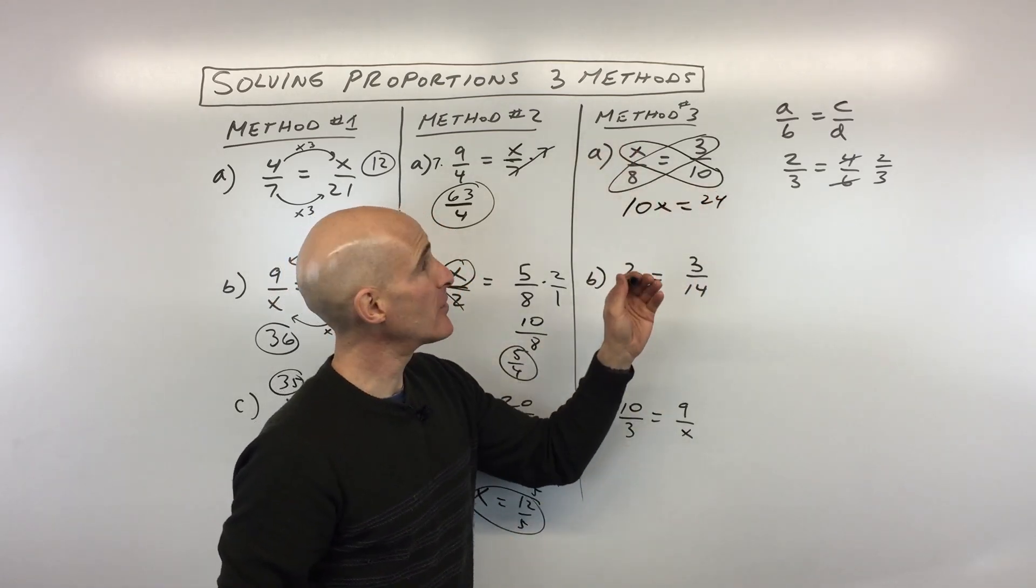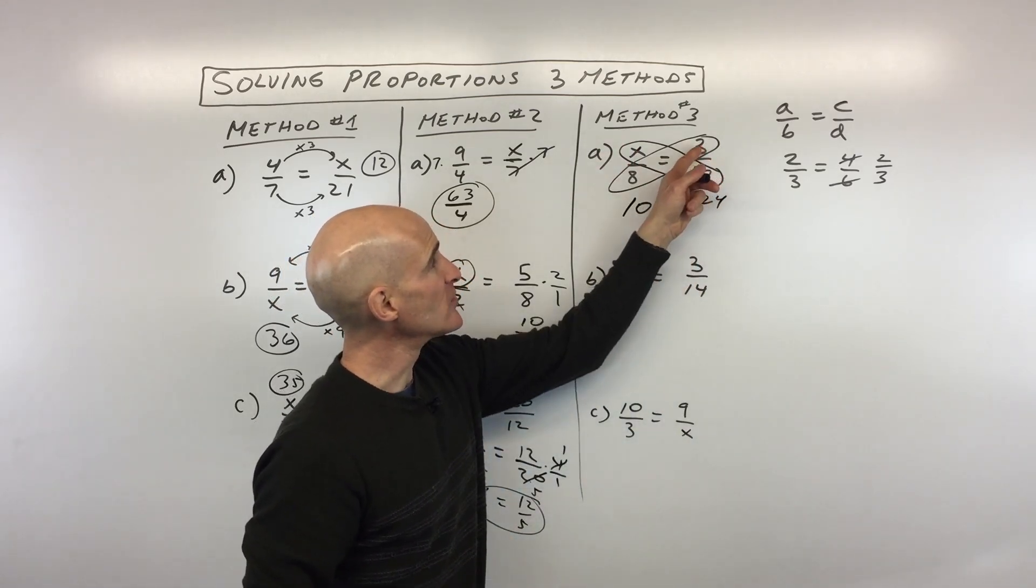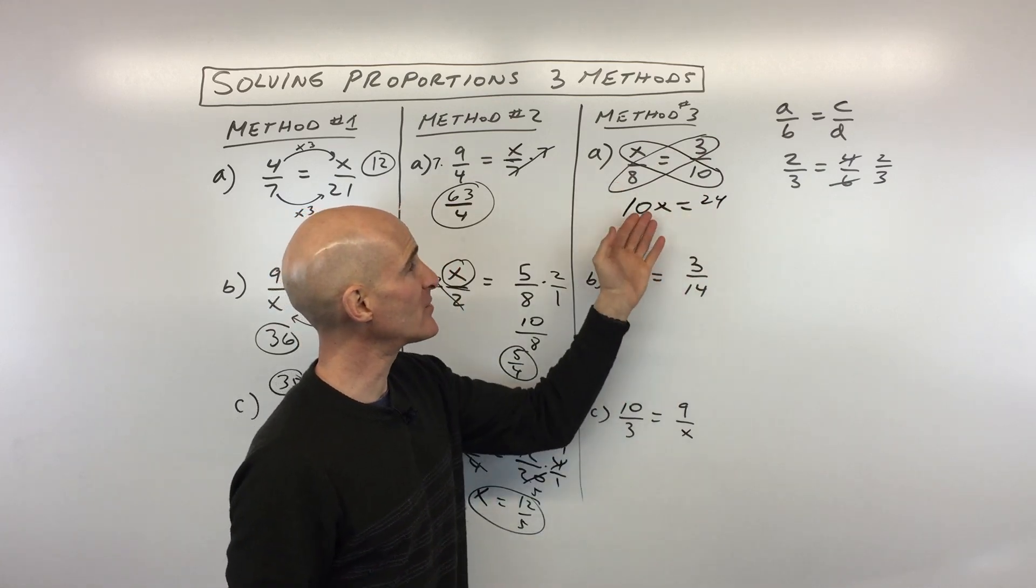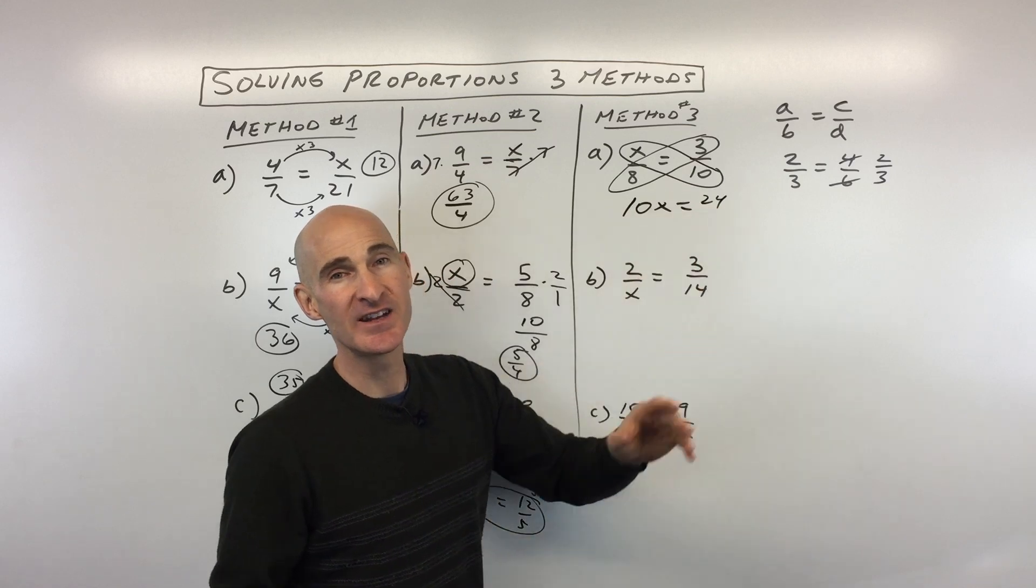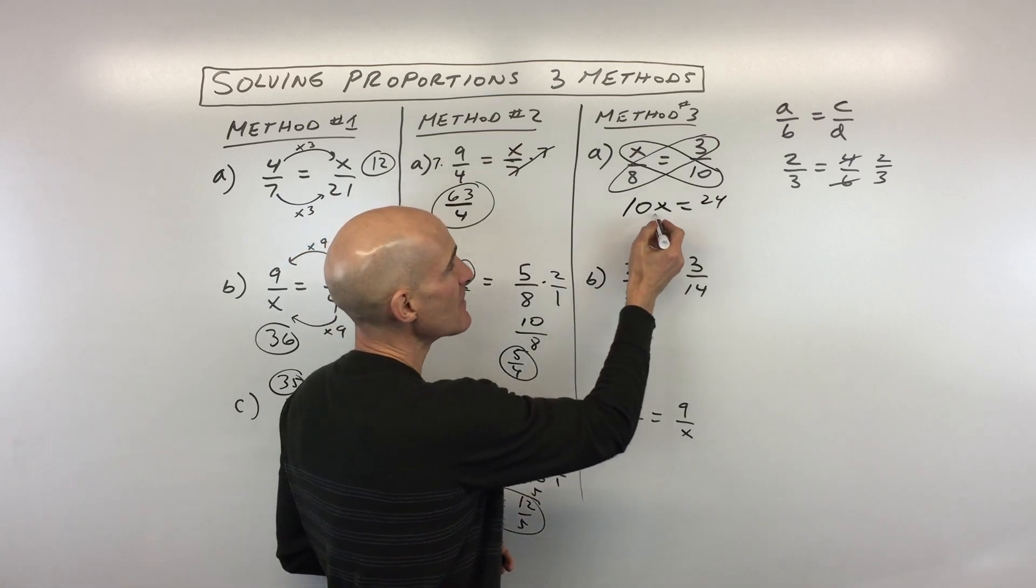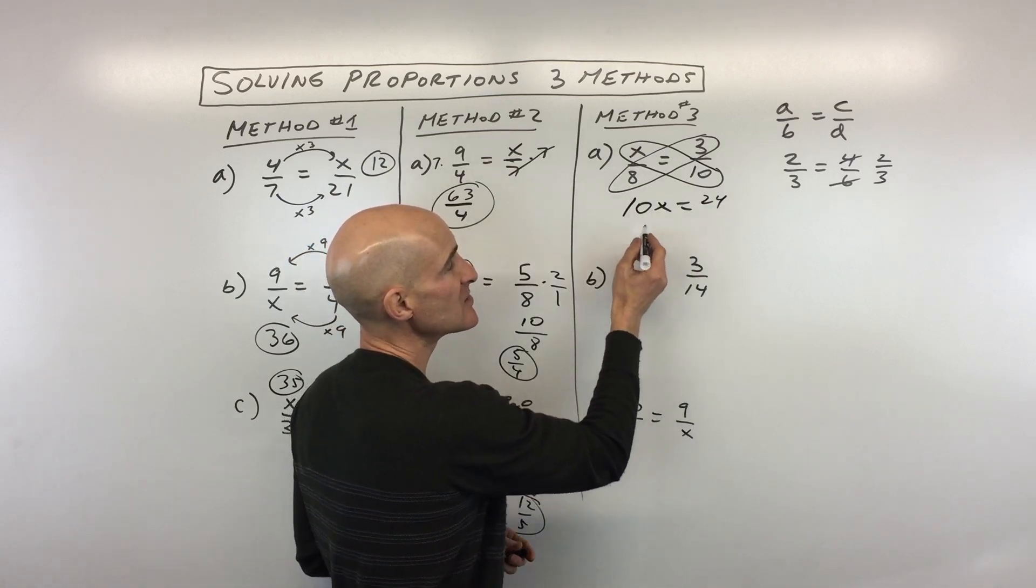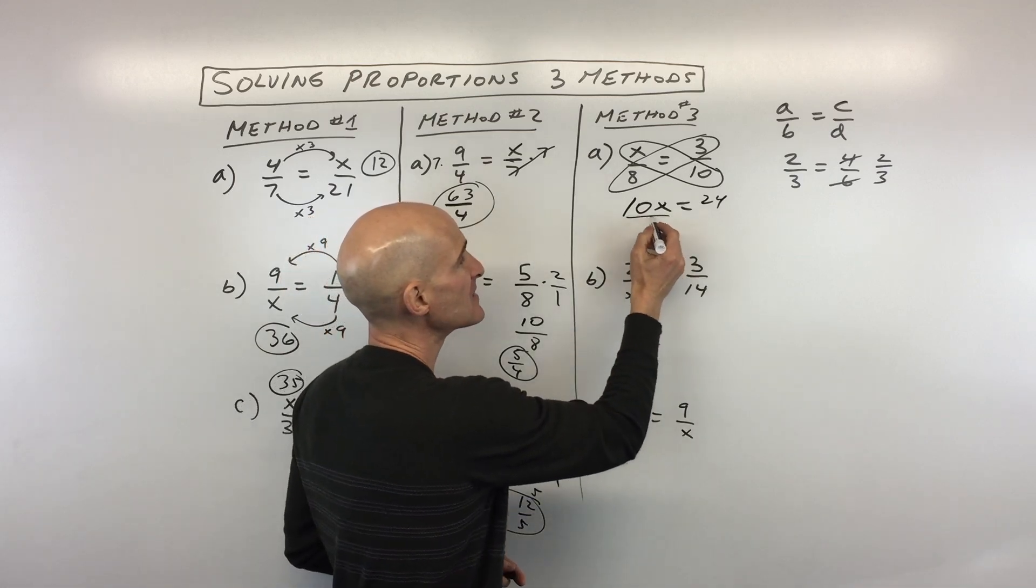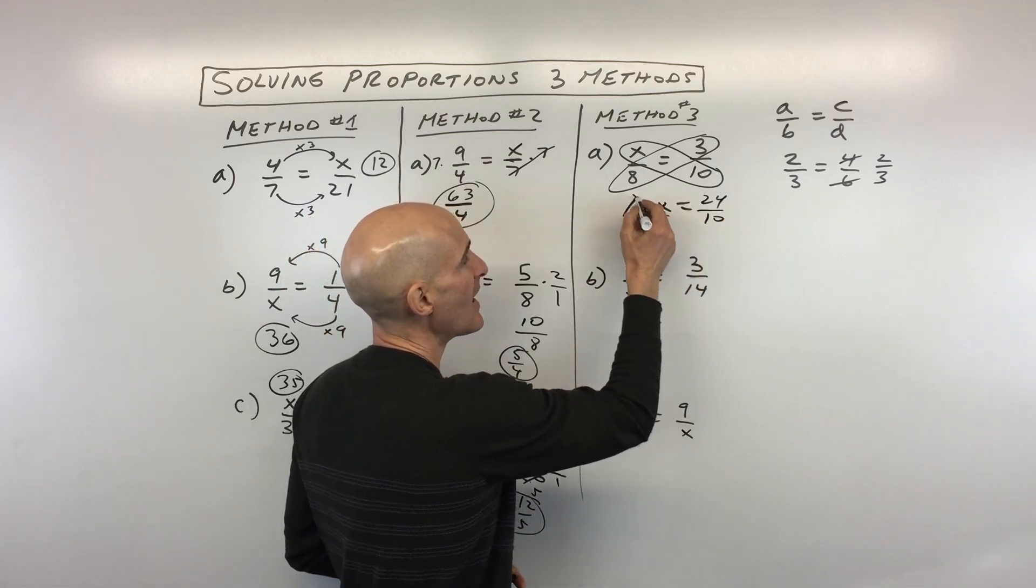But this gets rid of them for you. So basically, this diagonal multiply together 10 times x equals this diagonal multiply together, which is 24. Now some students ask me, does it matter if I put the 10x here or the 10x here? It doesn't matter. Just put the one diagonal on one side and then the other diagonal on the other side. And then the last step is we're trying to solve for x. But because these are right next to each other, that means they're multiplied together. What's the opposite of multiplying by 10? Of course, it would be to divide by 10.